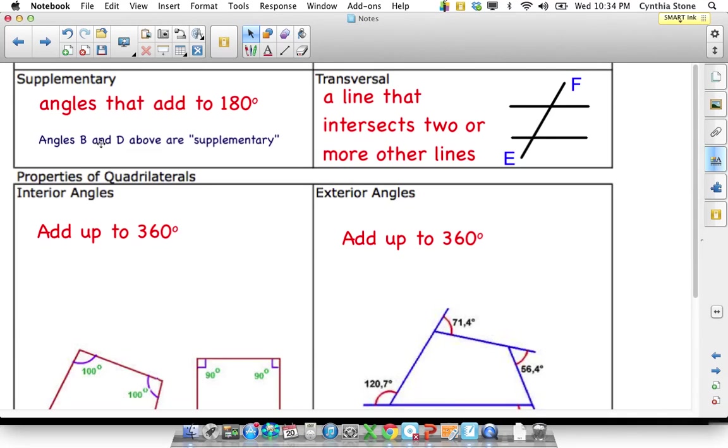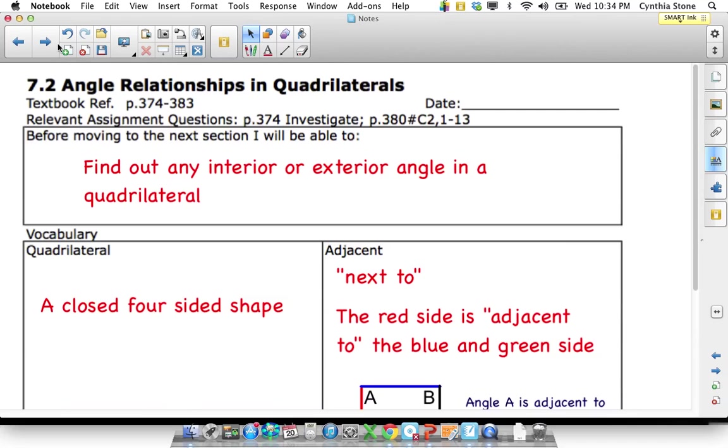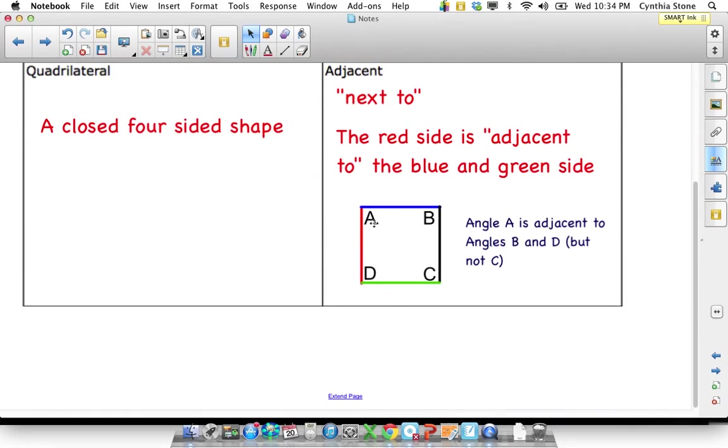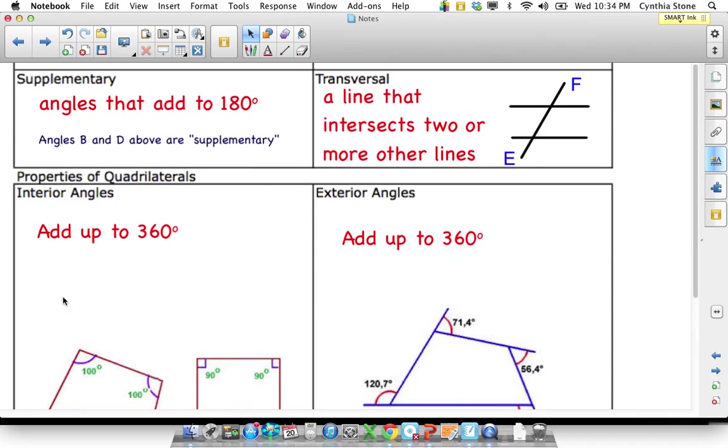Another term, supplementary angles are those that add up to 180. So if we look above, assuming this is a square, then these are each 90 degree angles. So that means that any two would be supplementary because if you add two 90 degrees together, you get 180 degrees.